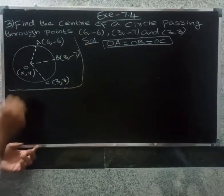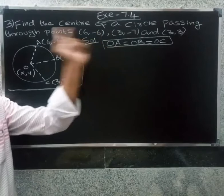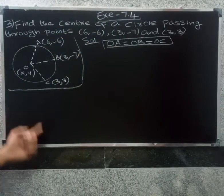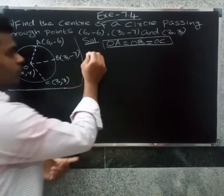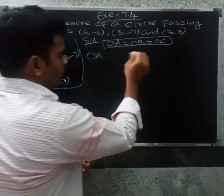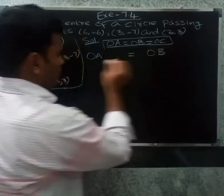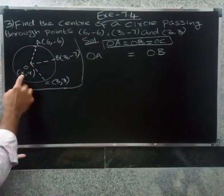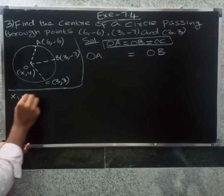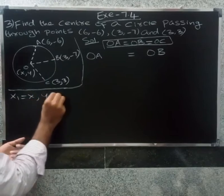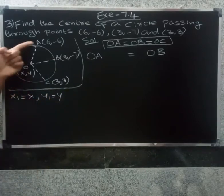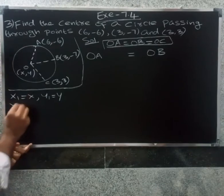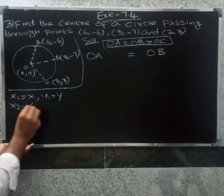The condition is OA equal to OB equal to OC. So the center is equidistant from all three points. OA equal to OB — let center be (x, y). So x1 equal to x, y1 equal to y. Here point A is (6, -6), so x2 equal to 6.